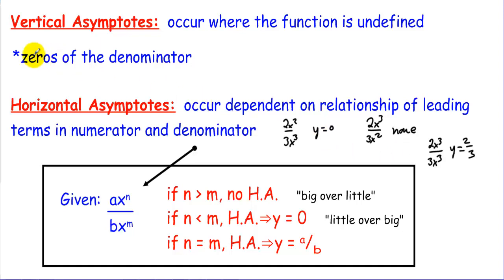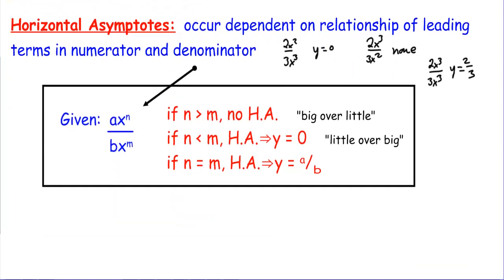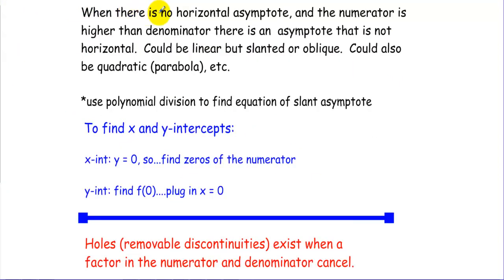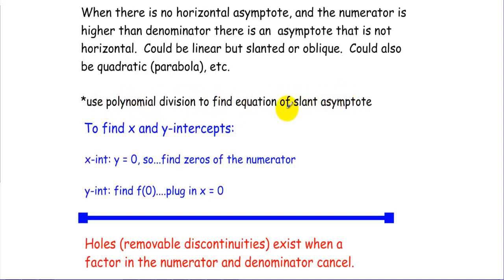When there is no horizontal asymptote and the numerator degree is higher than the denominator, there is a non-horizontal asymptote. It could be linear — we call that slanted or oblique — or it could be quadratic, parabolic, or other shapes. We use polynomial long division to find the equation of the slant asymptote.